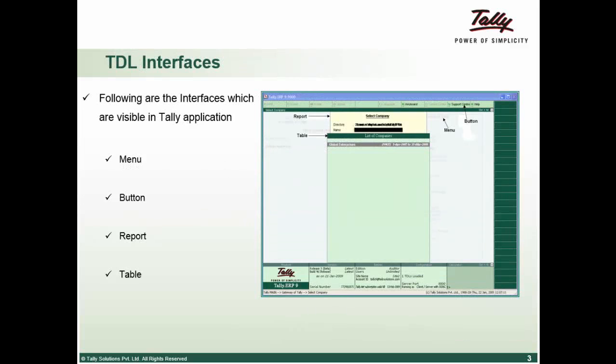We have already seen that TDL language is based on definitions and we have two artifacts: the interface artifacts and the data object artifacts. On this interface screen, as you can see, there are four visible interfaces, namely the menu, button, report, and table.